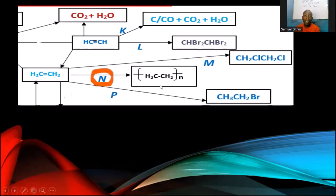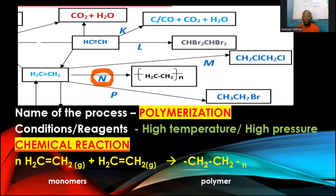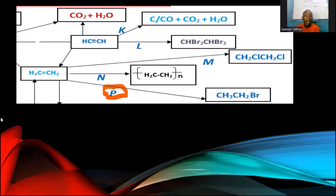Process N — ethene undergoing a reaction to form a large polymer (indicated by capital brackets and the letter n) — is addition polymerization. Conditions: high temperature, high pressure, and sometimes a catalyst such as Ziegler-Natta catalyst, aluminium oxide, or silicon dioxide. The repeating units are called monomers; they repeat to form the polymer. The double bond opens and creates room for more monomers to extend on both sides indefinitely.